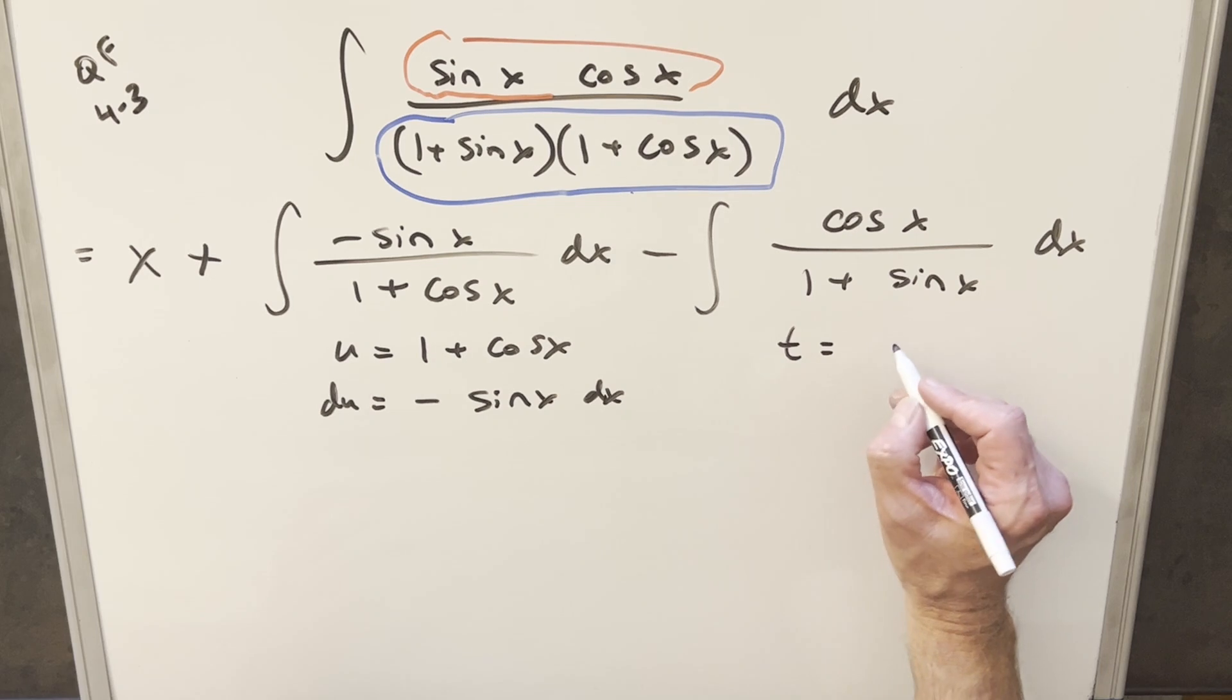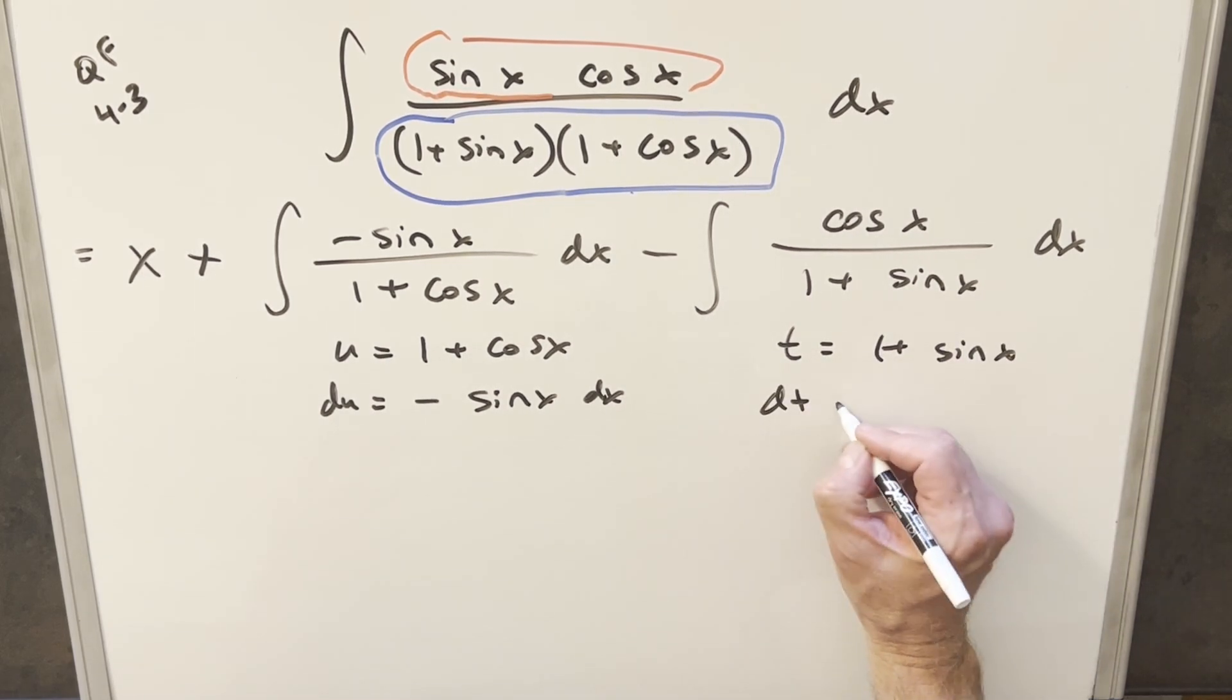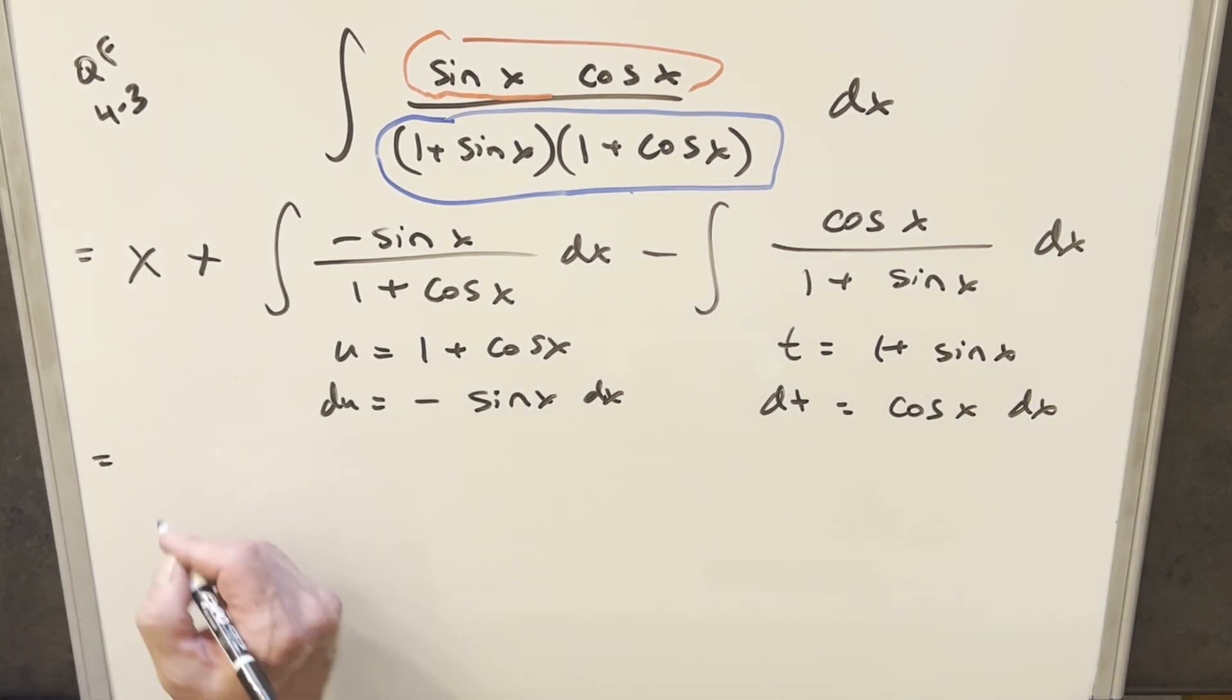we'll do something really similar. We'll do a t-substitution, 1 plus sine x. Take a derivative, dt is going to be just cosine x dx.